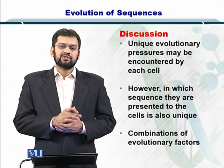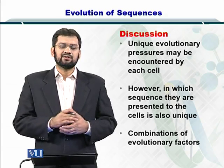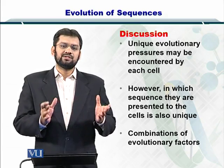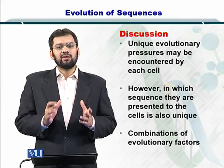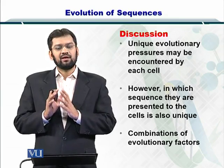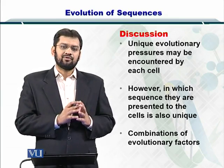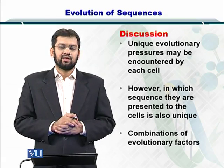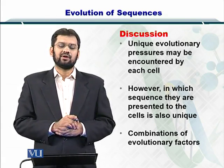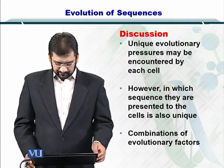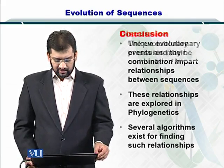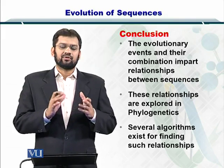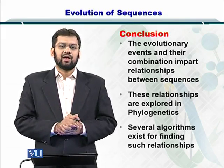These unique evolutionary pressures can cause unique changes in the DNA, and therefore speciation may occur, wherein a totally new species is created. You may not be able to say that the monkey in Pakistan versus the monkey in Africa are totally the same after a prolonged evolutionary period, and this needs to be incorporated in the phylogenetic tree as well. The combination of these evolutionary factors can lead to many different species and different types of organisms within a type.